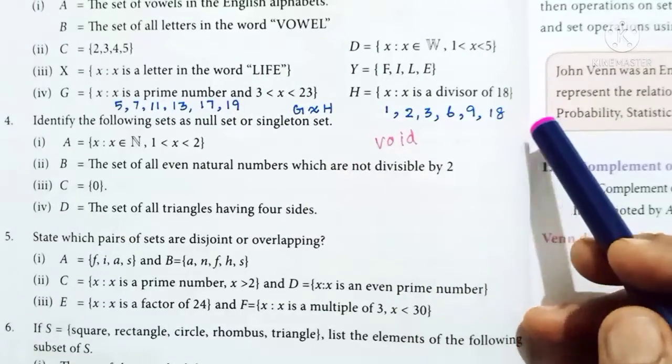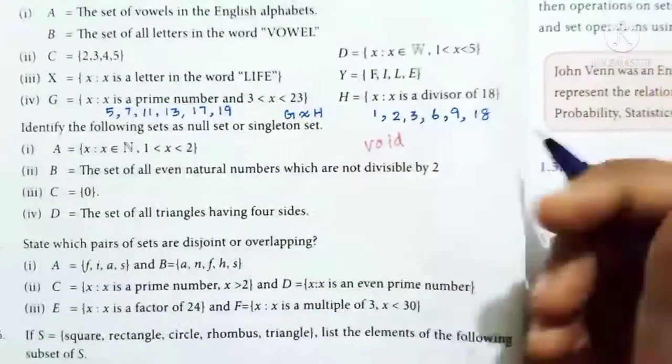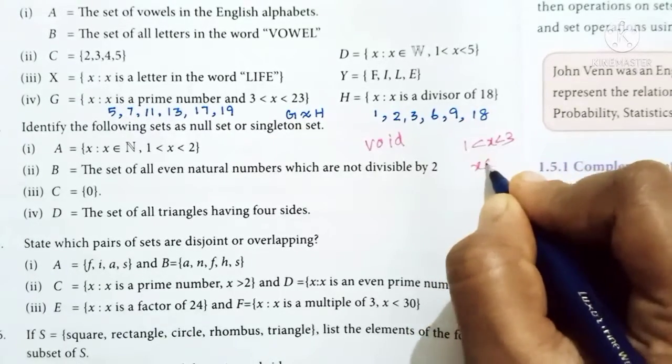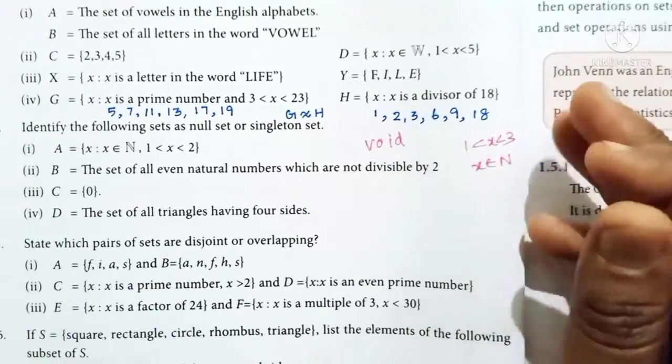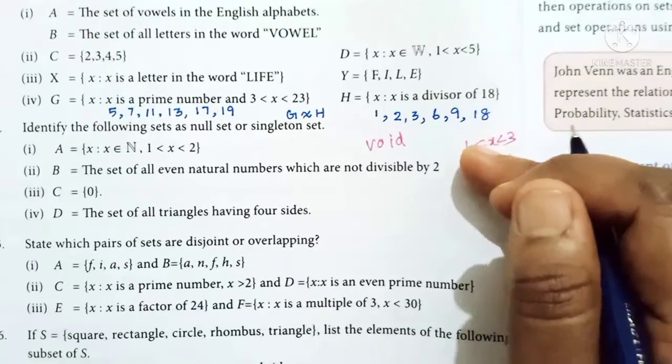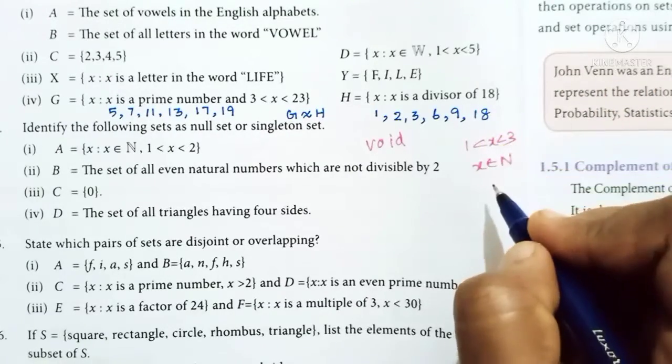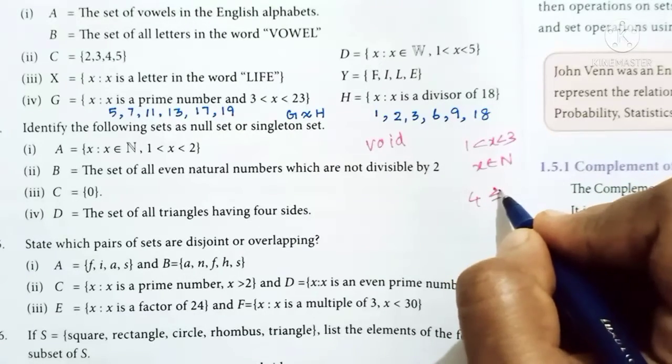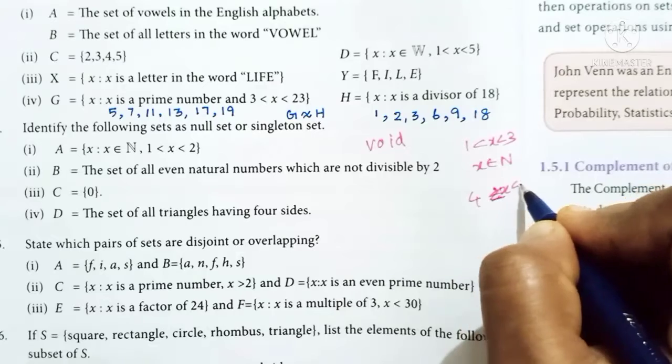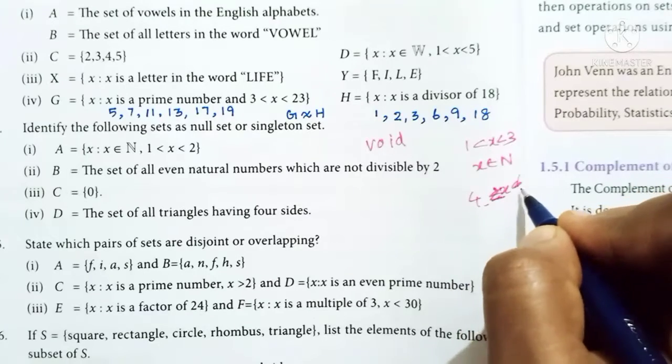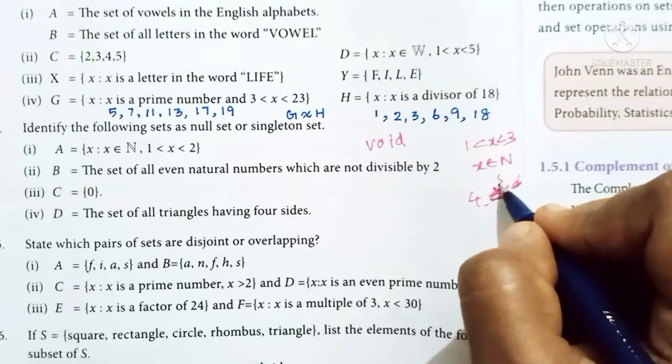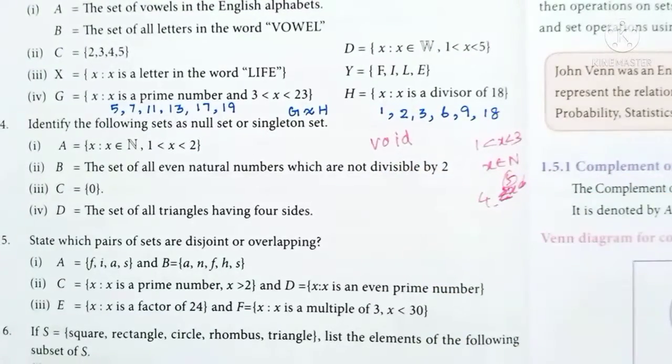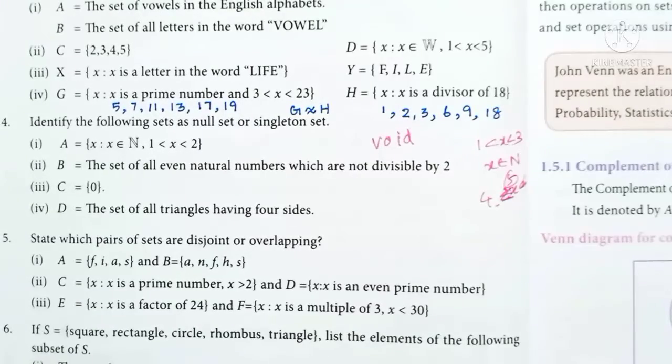Consider x where 1 < x < 3. For natural numbers 1, 2, 3, 4, 5, 6, only 2 satisfies this condition. This is a singleton set.